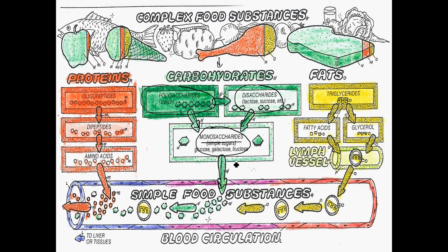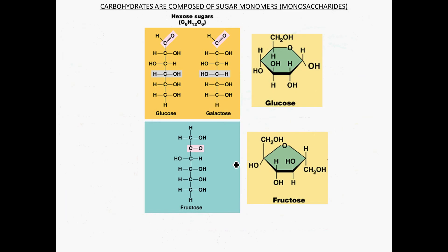Let's talk about the monosaccharides. There are many different types of carbohydrates, but all carbohydrates have carbon, hydrogen, and oxygen as their elements. The hexose sugars have the formula C6H12O6 — six carbons, twelve hydrogens, and six oxygens.